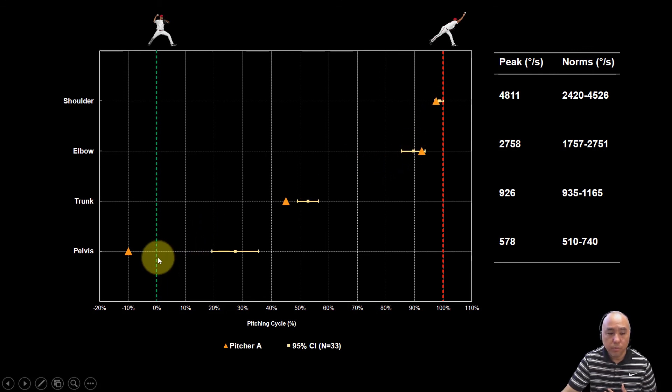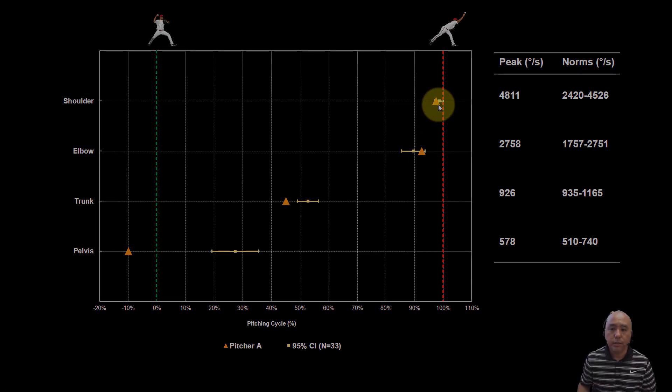So this is pelvic rotation, trunk rotation velocity, elbow extension velocity, and shoulder internal rotation velocity, which should peak right around ball release.